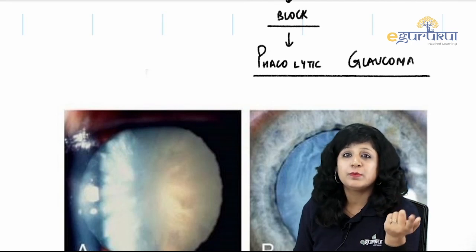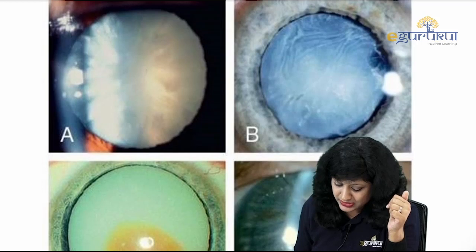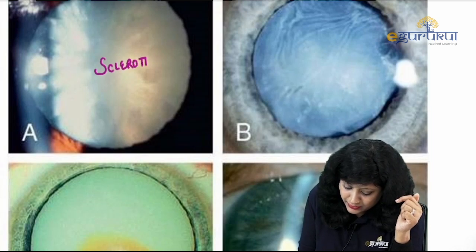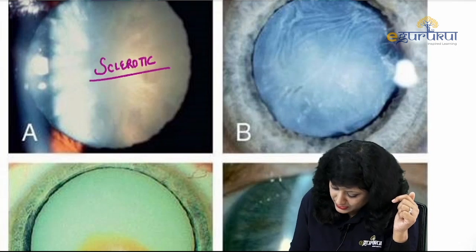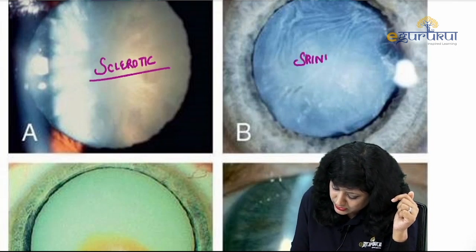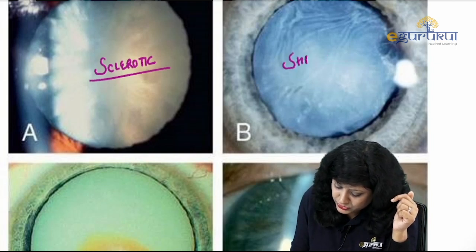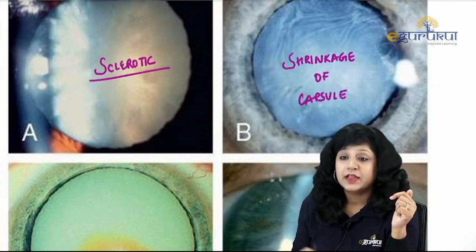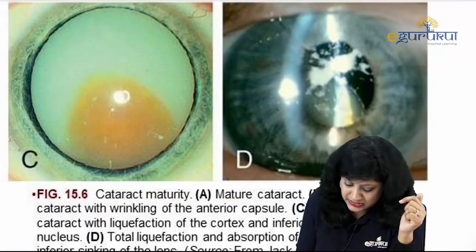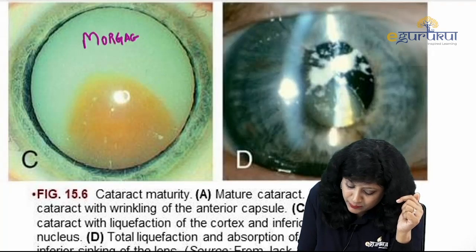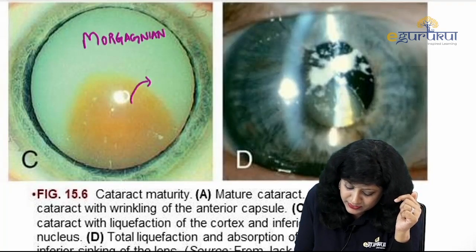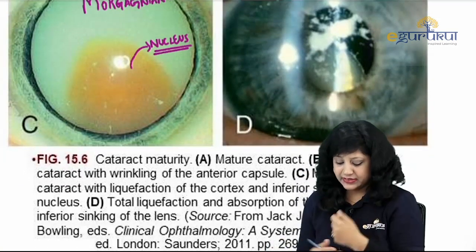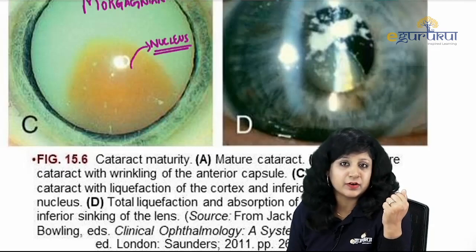So phacomorphic glaucoma is from the swollen intumescent cataract, while phacolytic glaucoma is from the Morgagnian hypermature cataract. On slit lamp you can see the shrunken capsule in the sclerotic type and the nucleus settled at the bottom in the Morgagnian type, with proteins leaking out causing phacolytic glaucoma.